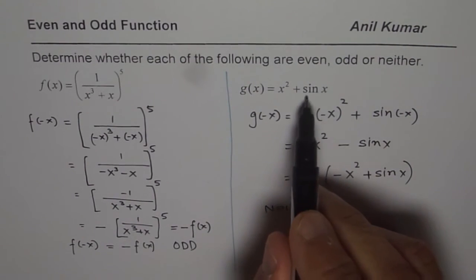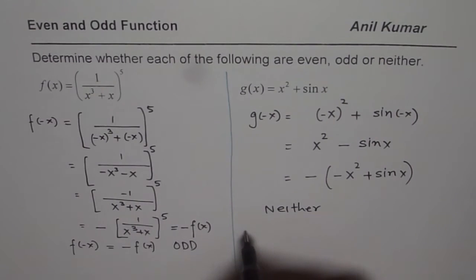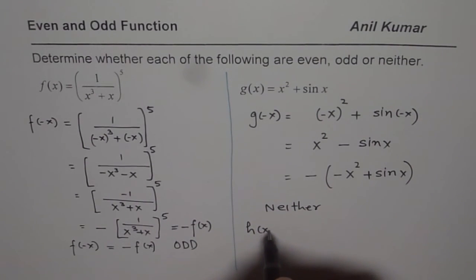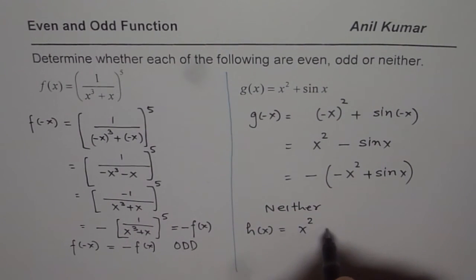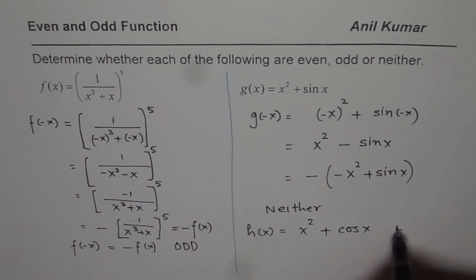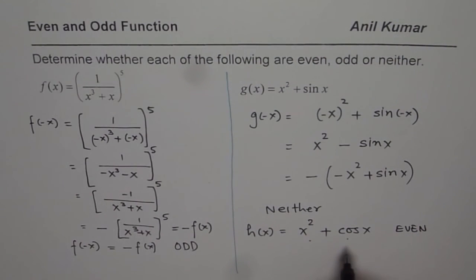However, if I replace sin x with cos x, let us say we have a function h of x equals x square plus cos x. This function will be even, since both the components here are even in nature. When you add two even terms, then you get even function.